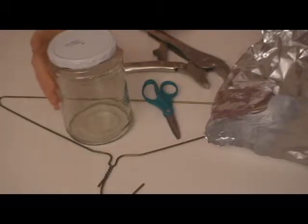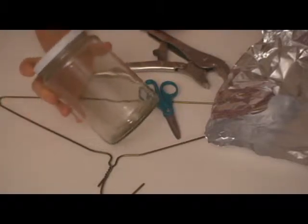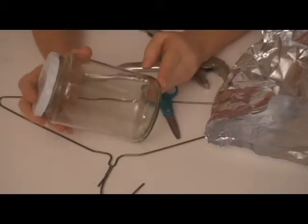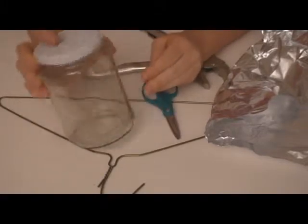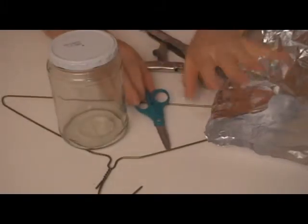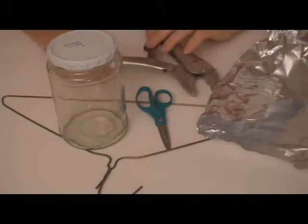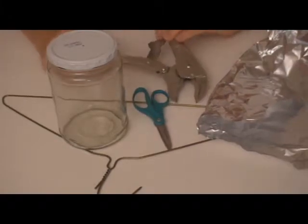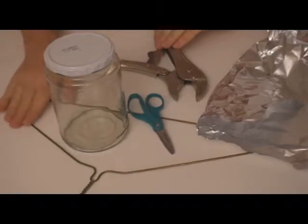The electroscope is going to be inside a glass jar. This could be from a pickle or mayonnaise jar. Make sure you have a lid, and we also need a pair of scissors, some aluminum foil, a pair of vice grips or a hacksaw, something to help you cut through a wire coat hanger.